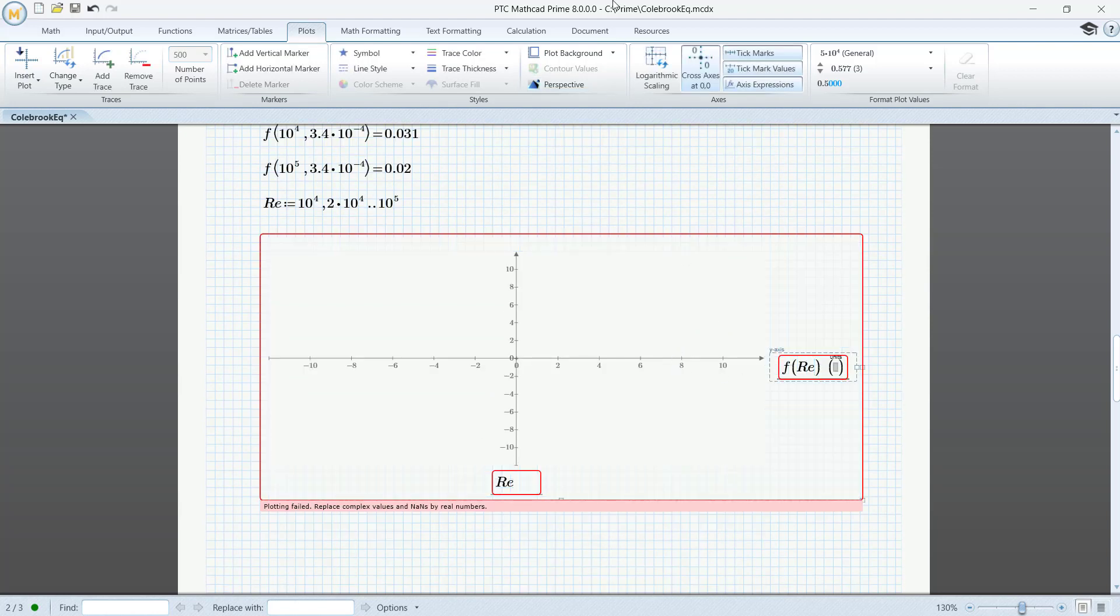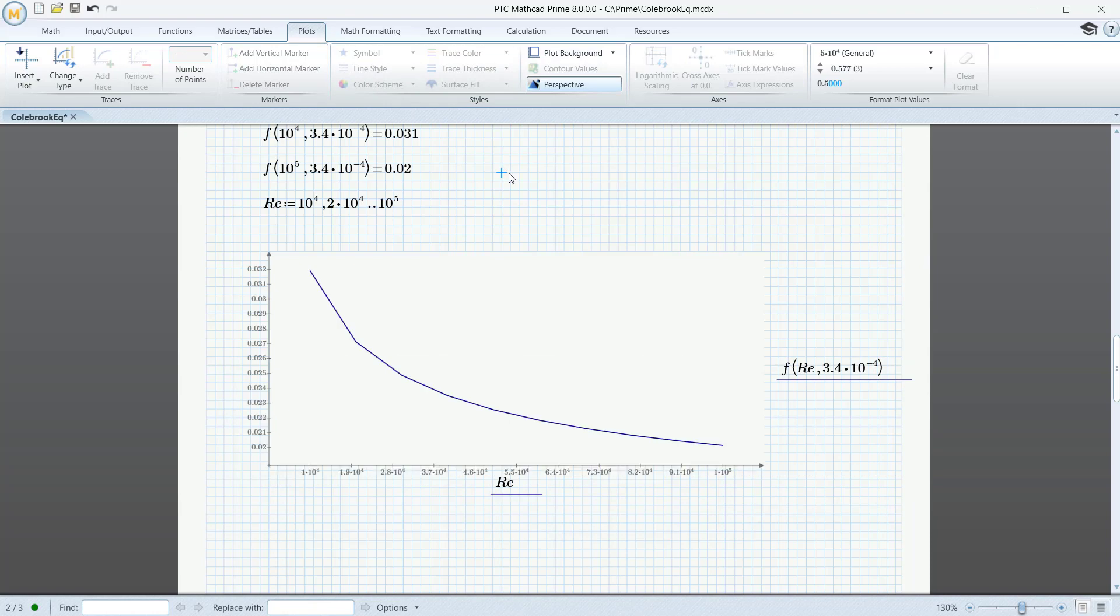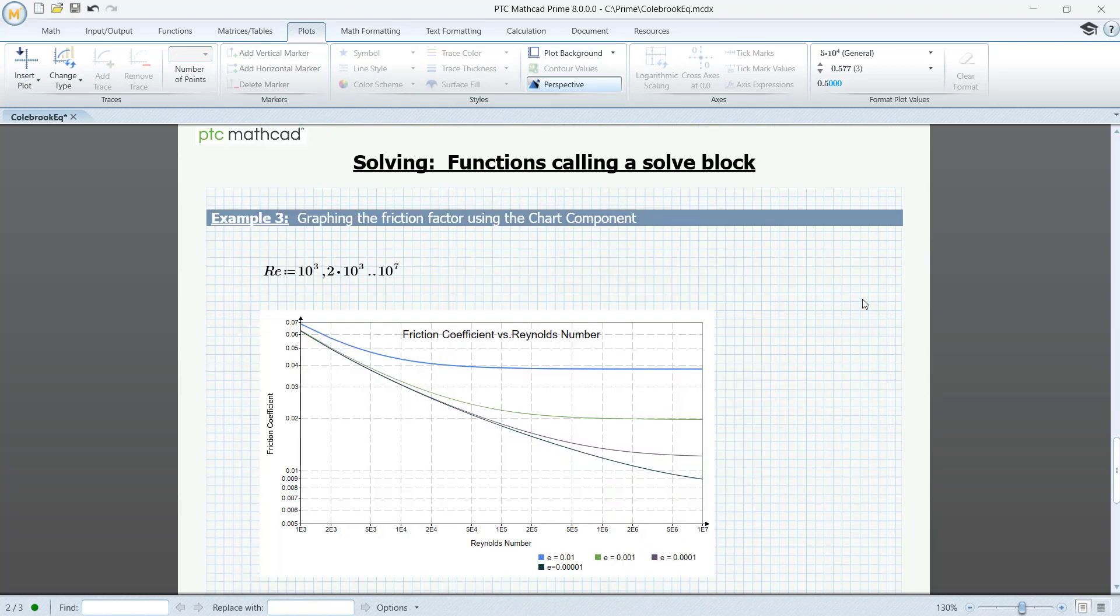And here we have to add the value of E. Finally, let's see a nice plot of F for various values of the relative roughness factor E using the chart component.